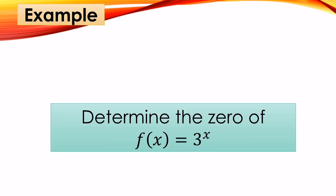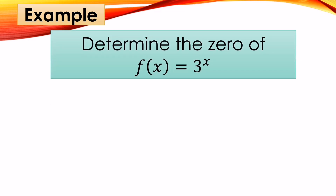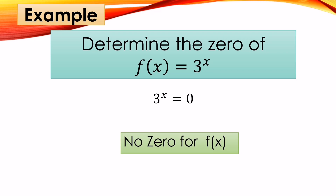Let us have an example. Determine the zero of f(x) = 3 raised to x. First, equate f(x) to zero, so 3 raised to x is equal to zero. If you substitute any value for x, it will never equal zero. For example, 3 raised to 1 gives 3, not zero. So there is no zero for this f(x).